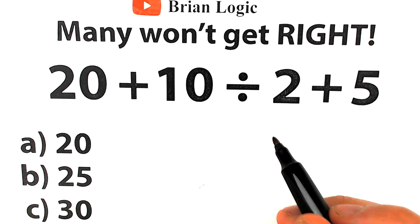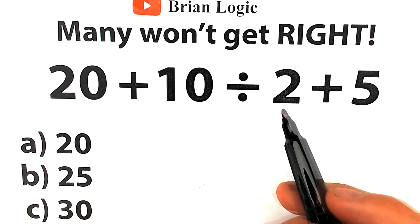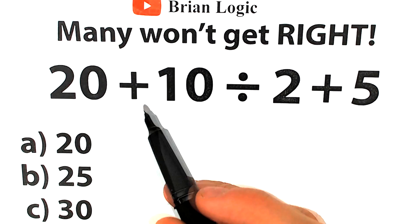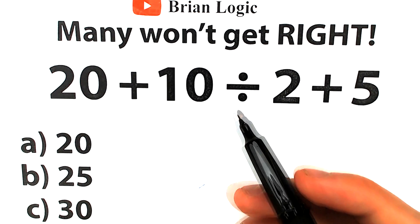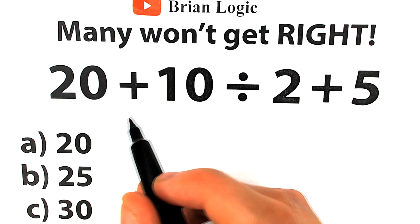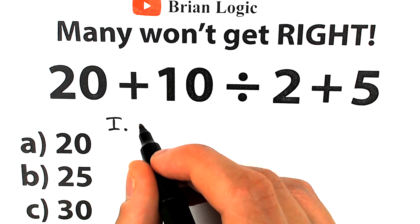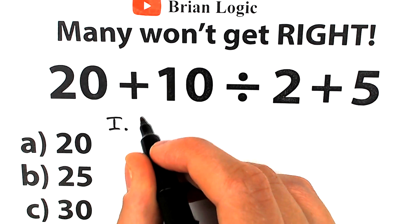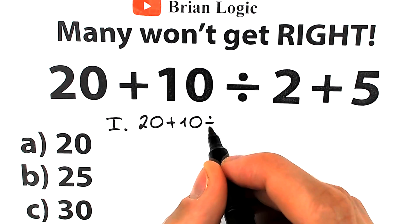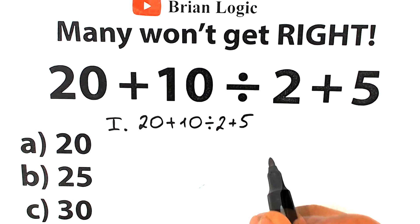It will be really interesting to check our answers at the end of the video. So, seems pretty basic — we have 20 plus 10 divided by 2 plus 5. We have addition, division, addition. Everyone learned this stuff in the third grade. So right now I want to show you this first interpretation. A lot of students solve this question like that — we have 20 plus 10 divided by 2 and plus 5.